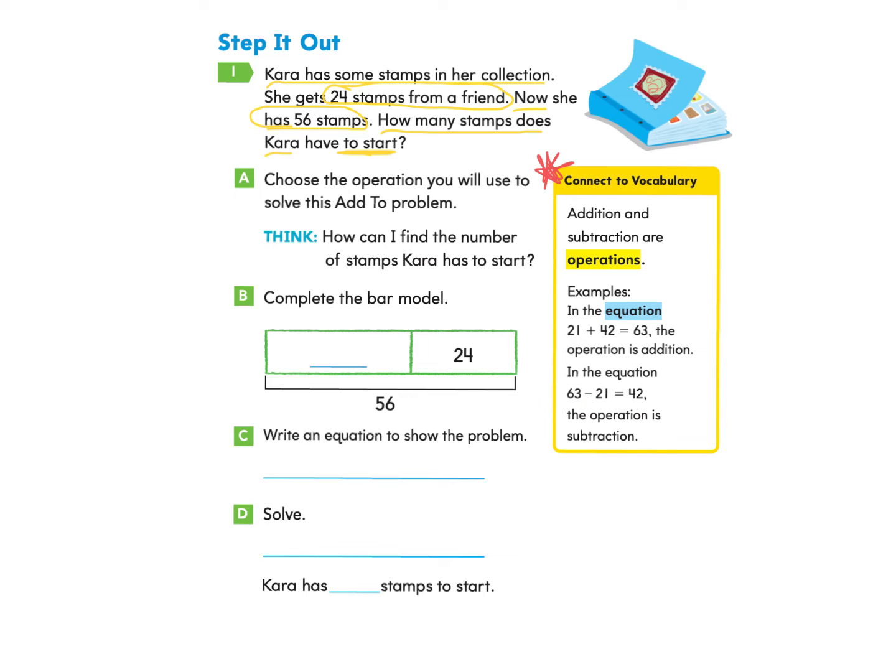So we will be using an addition equation to add to this problem. Now let's take a look at part B. Complete the bar model. So we have the total number of stamps here, which is 56, which we were told. And we have the 24 stamps that she received from a friend here. So our unknown number is going to go here.